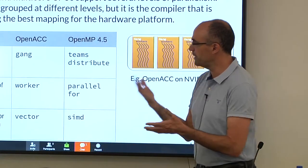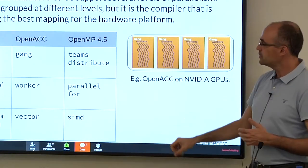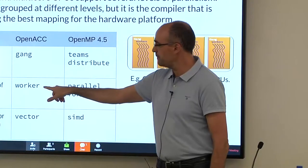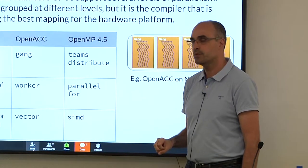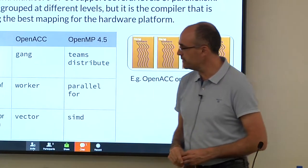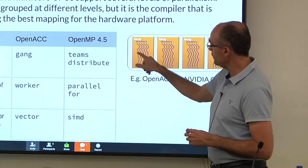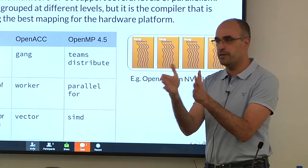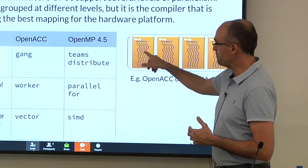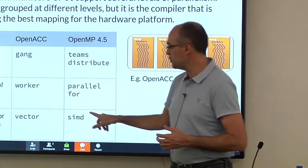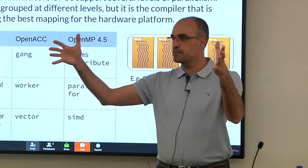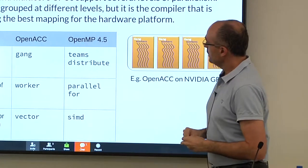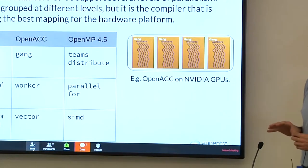In OpenMP, we have an equivalent. We have, again, three levels. So the gang level is specified by the teams distribute. The worker level is specified by the parallel for. And the additional level is usually SIMD vector. So within all of this, the threads are somehow tied to each other so that all of them are using different lanes of the vector hardware. So this happens on the GPU using vector. And this also happens on the CPU if you take multiple threads and you vectorize some inner loops within the multi-threaded code.